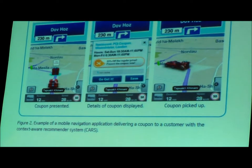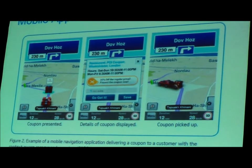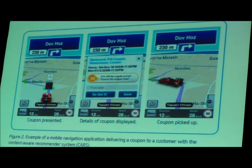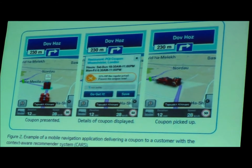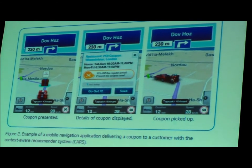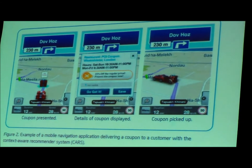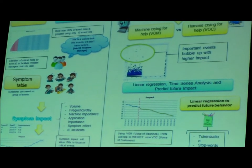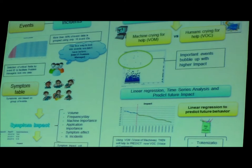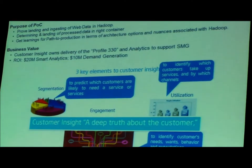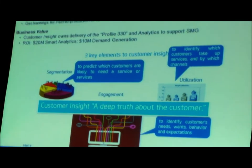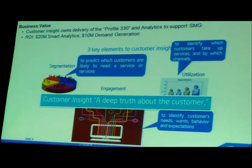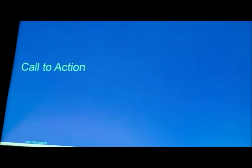We have white papers on both of those use cases. Our contextual recommendation engine provides first-to-market coupons based on contextual parameters like time of day, coupon value, and user preferences — we found a roughly 45% increase in coupon usage through this recommendation engine. The customer insight use case allows us to understand which customers are ready to buy and when, so we can intercept them and help sell sooner.